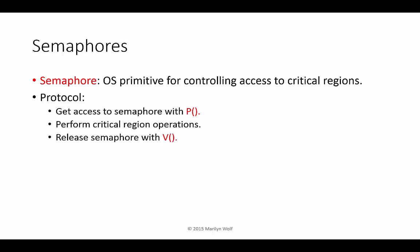We can build critical regions in code using a semaphore, which is an operating system primitive for controlling access. The traditional names for semaphore operations are P and V, from Dutch terms for flags used to control access to shared railroad track. Access to the beginning of the critical region is controlled with P, which will not return until the critical region is available. When done, the process uses V to release the semaphore so another process can perform its critical operation.